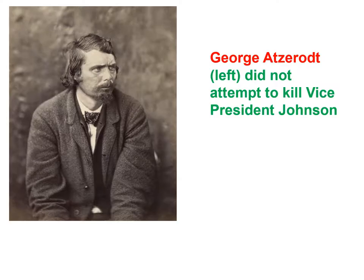Another conspirator, George Atzerodt, was assigned to kill Vice President Andrew Johnson, but he didn't go through with it. He was not involved that night, but they would find out he was part of the conspiracy later on.